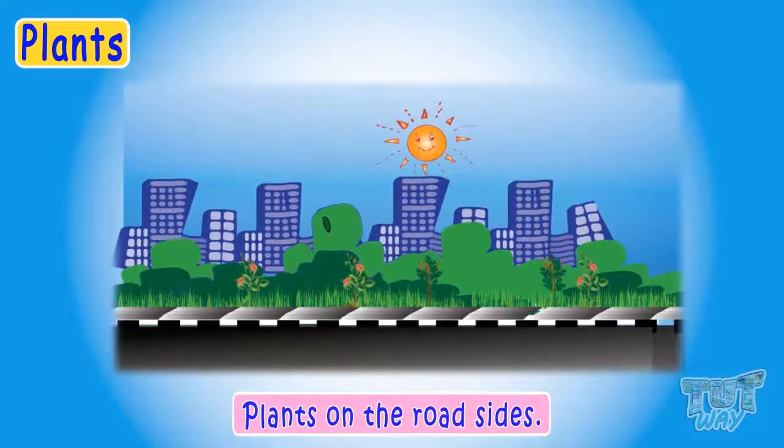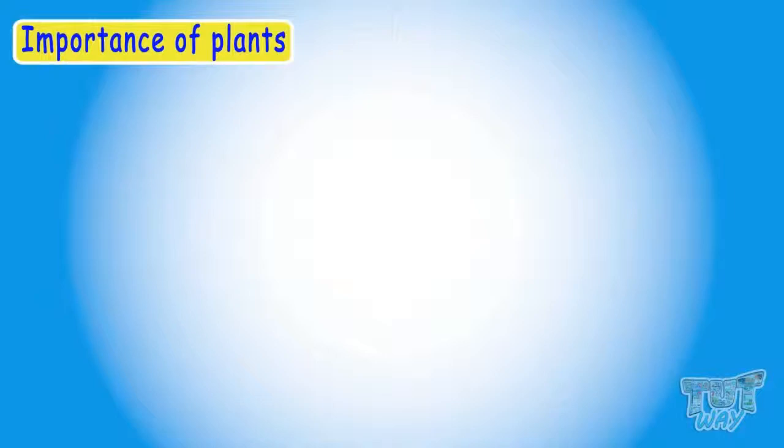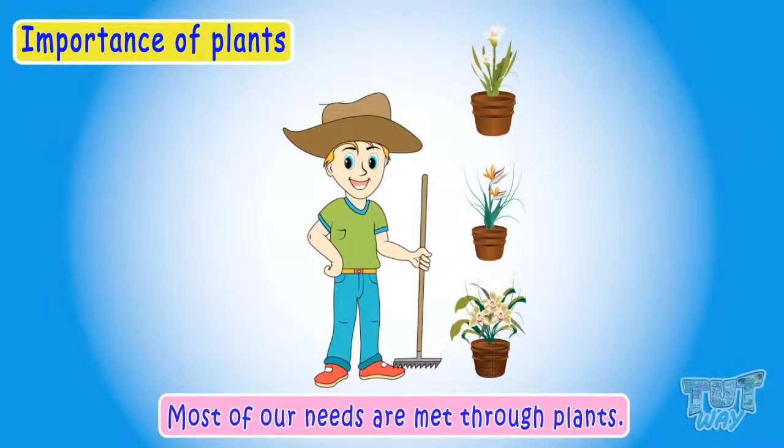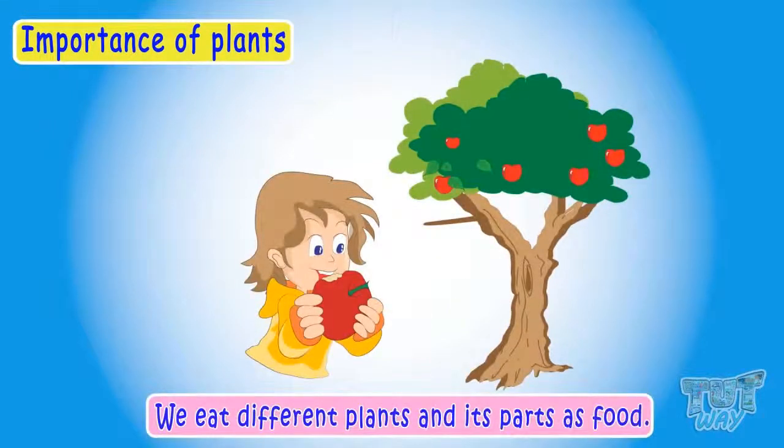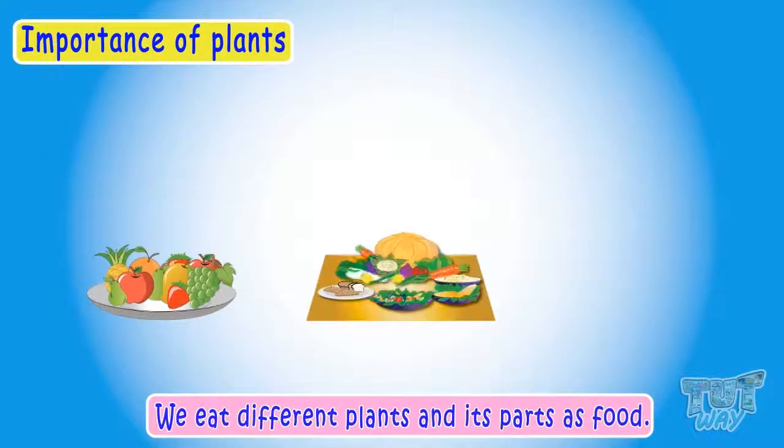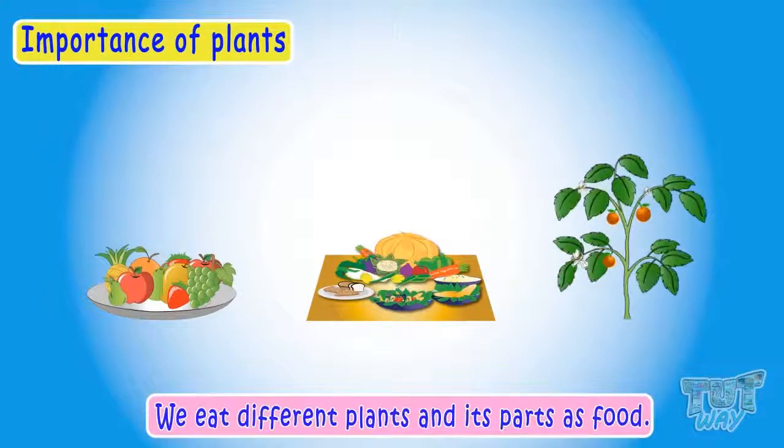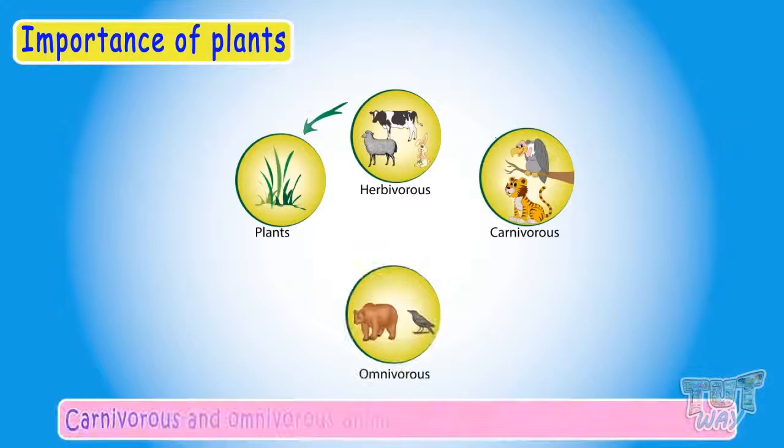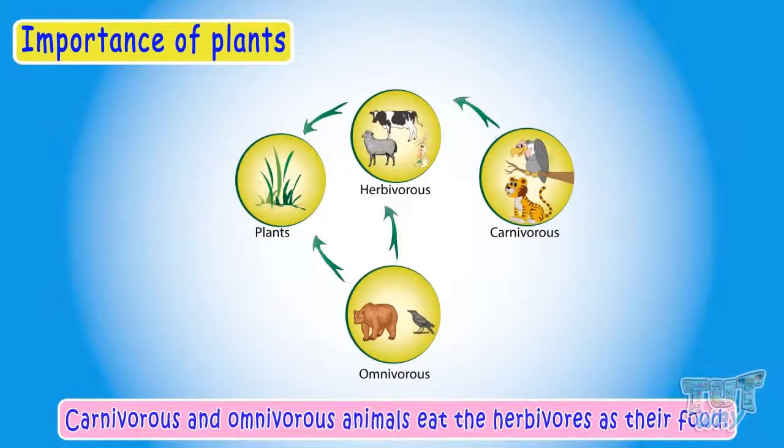Now let's try to understand how important plants are for us. Plants are very important for all living things. Most of our needs are met through plants. We eat different plants and its parts as food, like fruits and vegetables. All herbivorous animals eat plants to live, and then carnivores and omnivores eat the herbivorous animals as food.